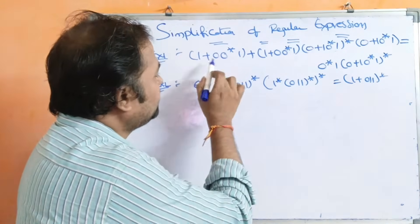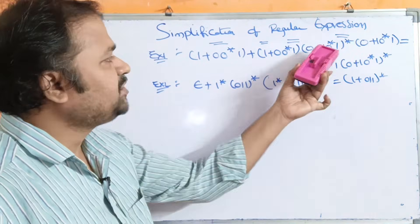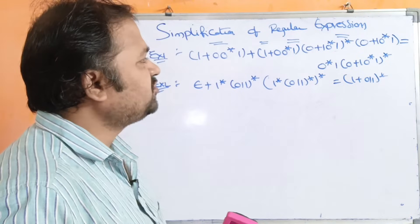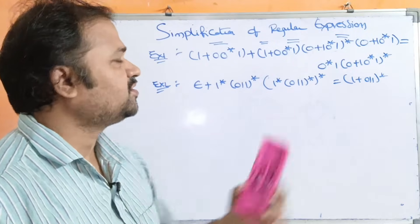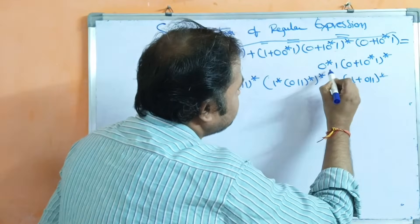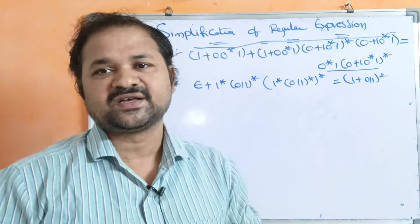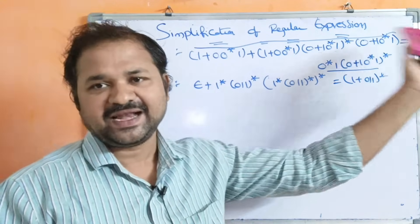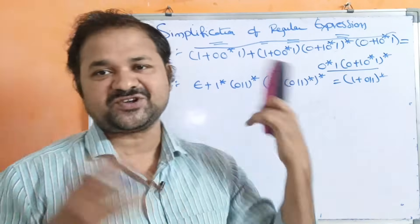The first example is: (1 + 00*1) + (00*1)(0+1)(00*1)* · (0+1)(00*1)* = 0*1 · (0+1)(0*1)*. This is nothing but the LHS, whereas that is the RHS. In an examination, the question may be given as 'prove that', so we have to prove LHS and RHS are equal, or we can call this the simplification of the regular expression.